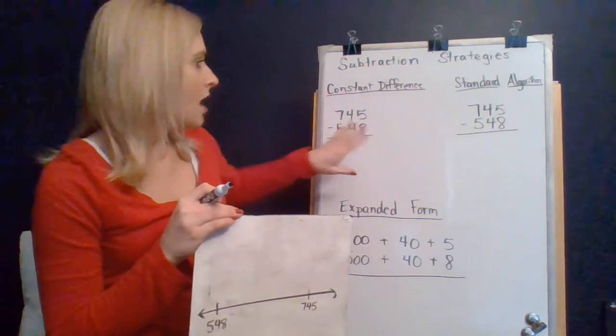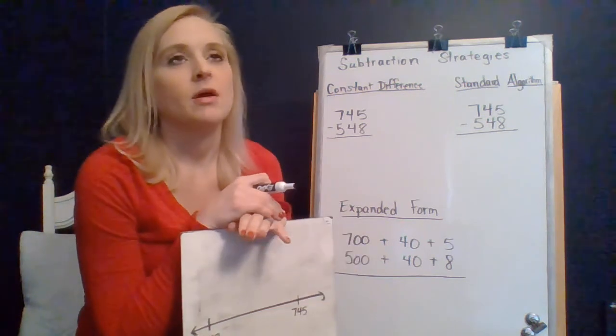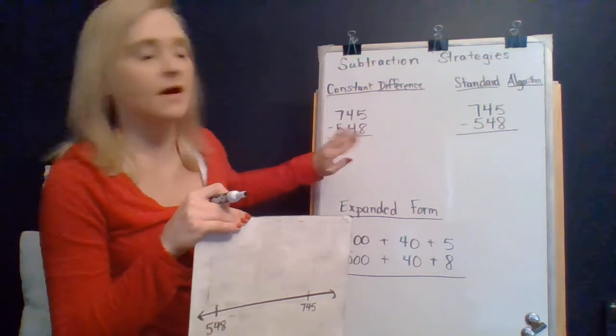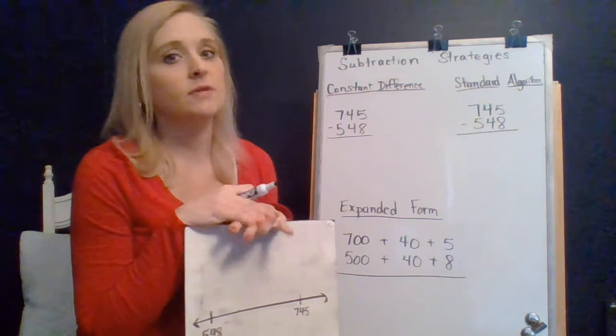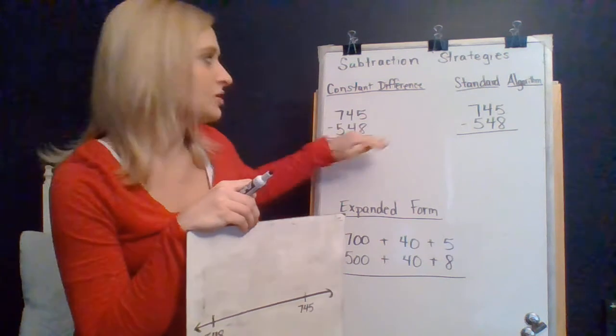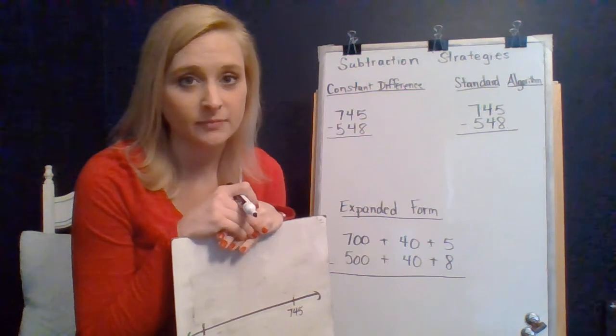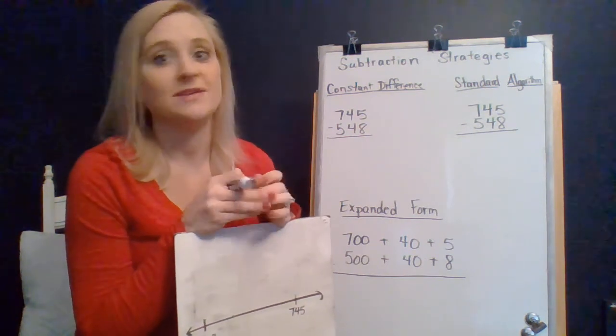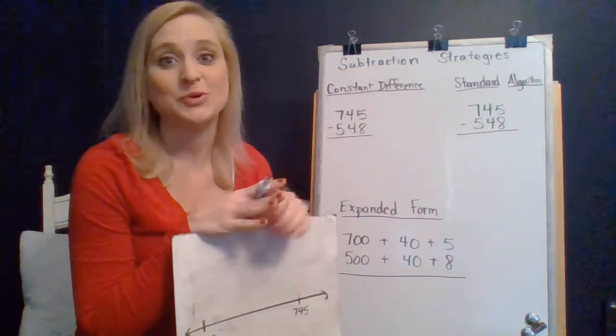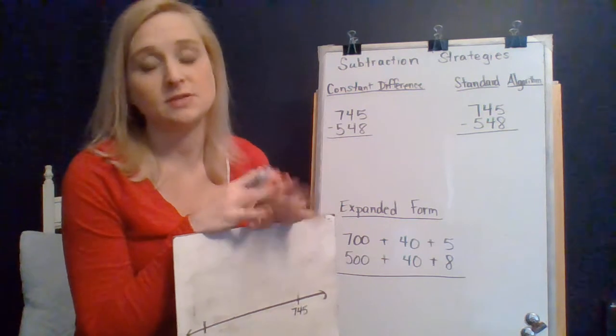But I thought I would take this problem. I think it's the very first subtraction problem after the example on your first math and writing work, so 745 minus 548. If we're thinking about the constant difference strategy, we're trying to get, especially the part that we're removing, to a very friendly number. And what do I mean by friendly number? It's numbers that end in zeros. The more, the merrier, right? Because when we're taking away zeros, those are really easy to remove. You're not taking away anything. So we want to get as many of these place values to zero as possible.